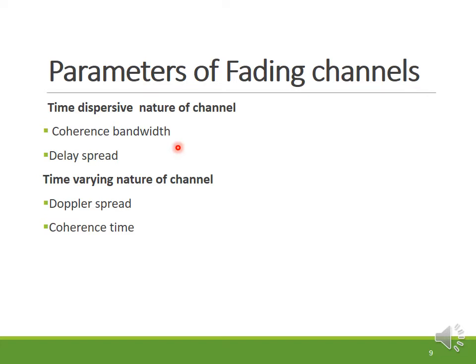Next are the parameters of fading channels. There are mainly four parameters: based on the time-dispersive nature of the channel there are coherence bandwidth and delay spread; based on the time-varying nature of the channel there are Doppler spread and coherence time. We will discuss each of these parameters in detail.